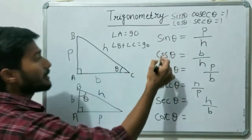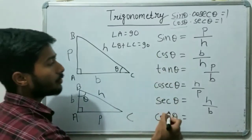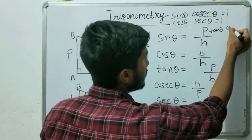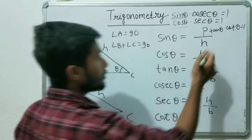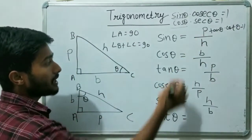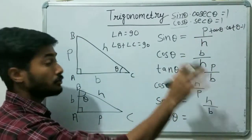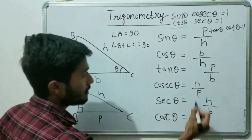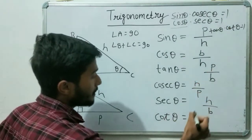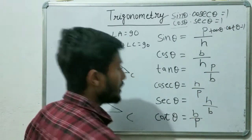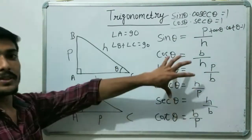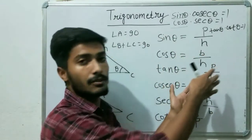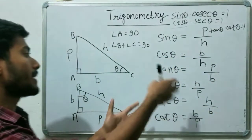Similarly, there is a relation between tan theta and cot theta: tan theta into cot theta equals 1. So the value of cot theta is the reverse of tan theta, which gives B upon P. These are the basic concepts and formulas of trigonometric functions. Once you know this concept of the right angle triangle, you can easily find the values of all six functions.